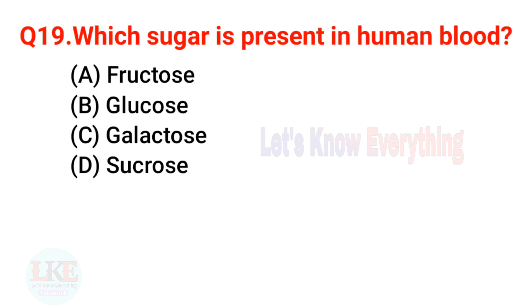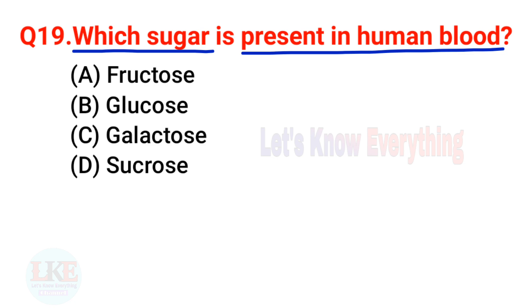Question 19: Which sugar is present in human blood? A) Fructose, B) Glucose, C) Galactose, D) Sucrose. The right answer is option B, Glucose.